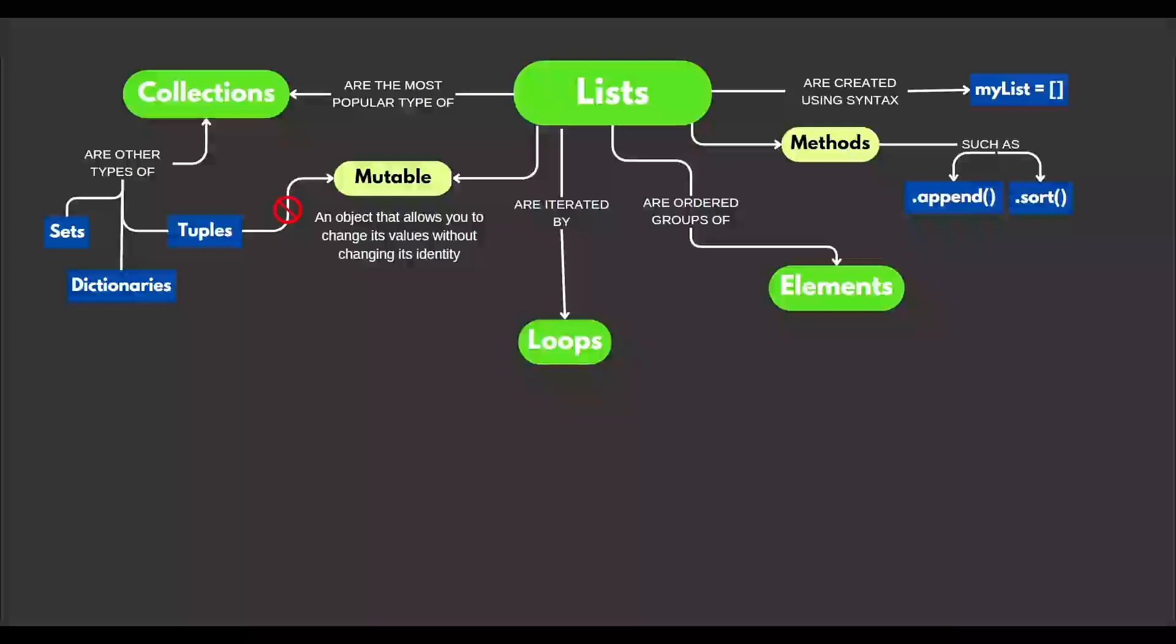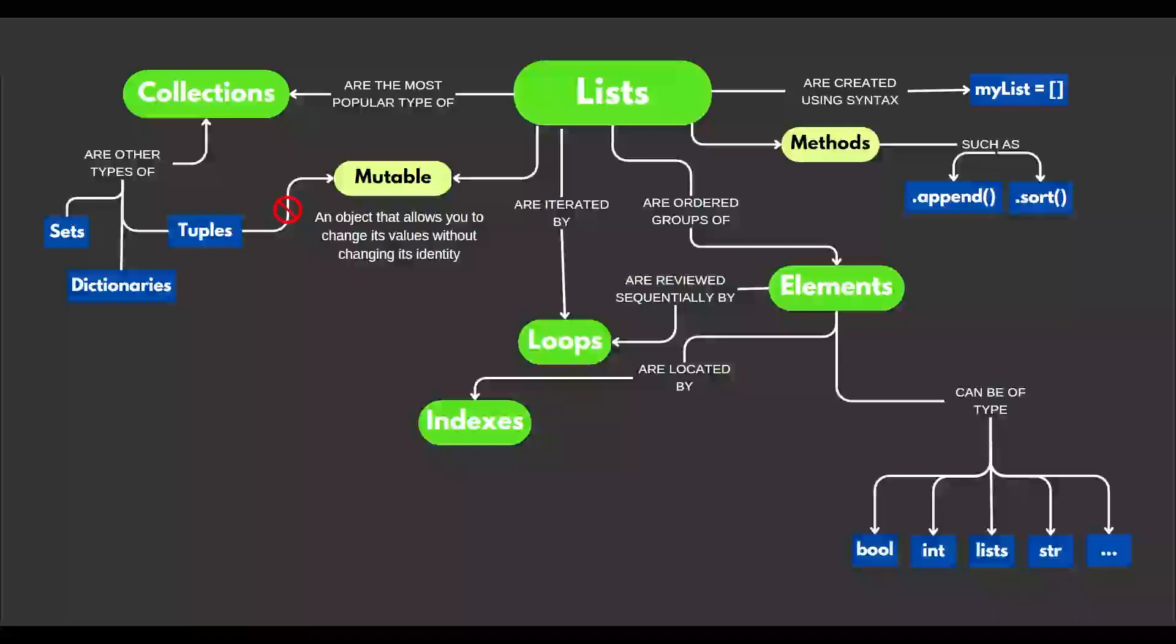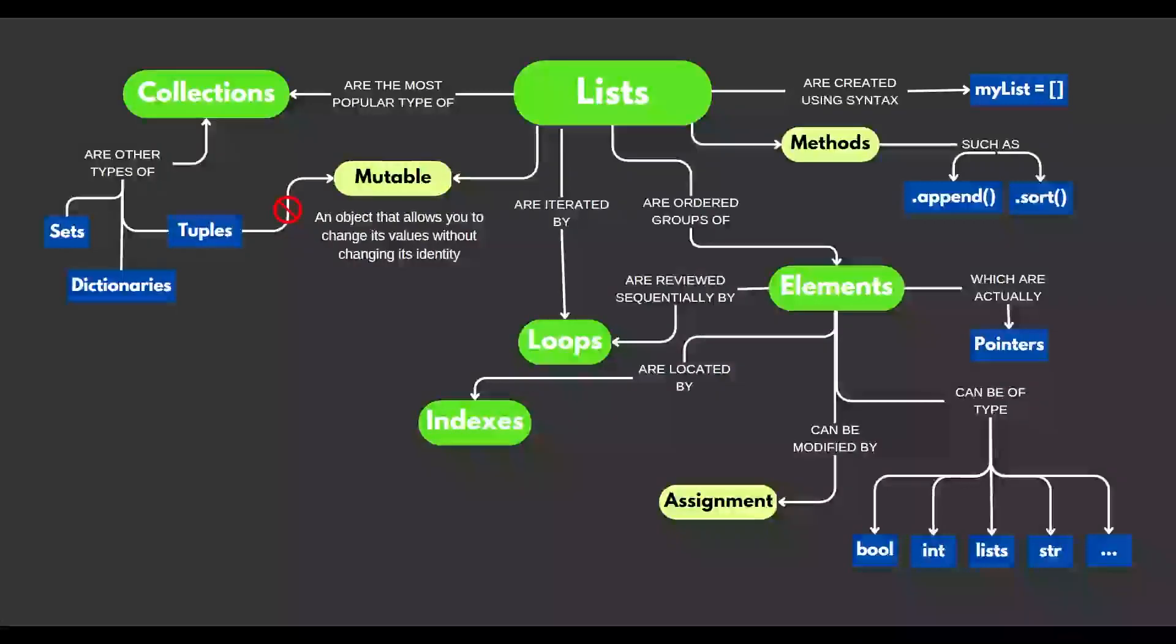Tuples are not mutable. Elements are reviewed sequentially by loops. Elements are located by indexes. Elements can be of type boolean, integer, list, string, or anything else. Elements are actually pointers, and elements can be modified by assignment.